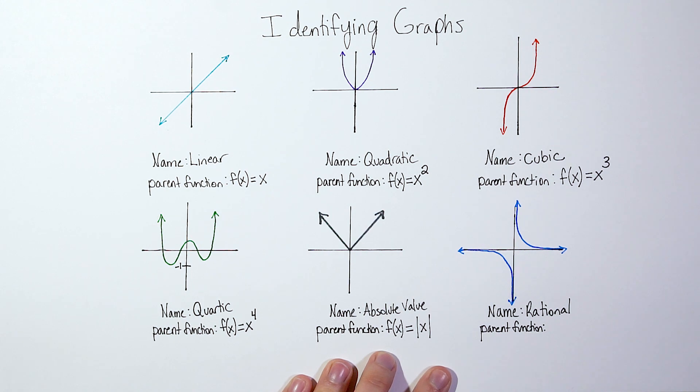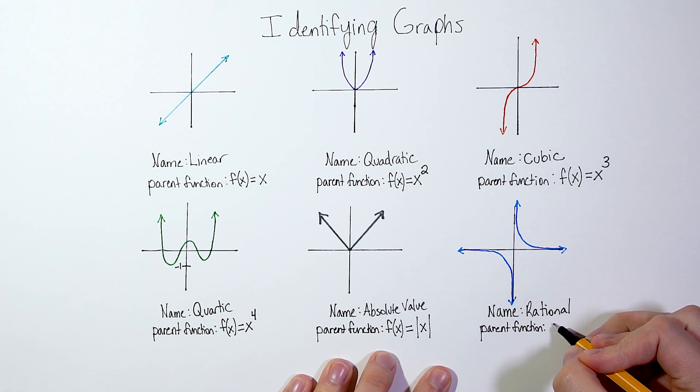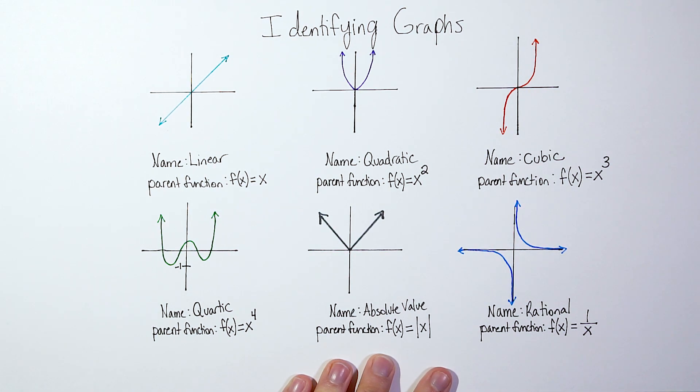And the parent function of a rational would be f(x) = 1/x, 1 divided by x. That is the parent function of a rational function.